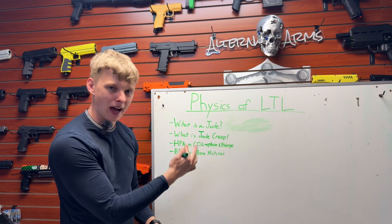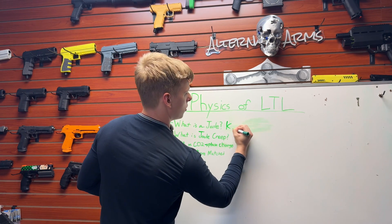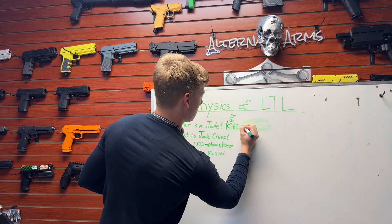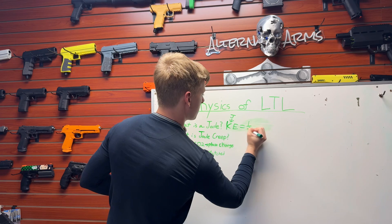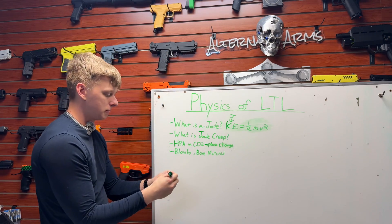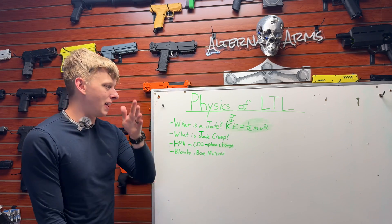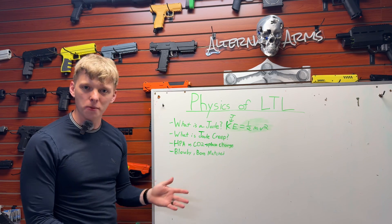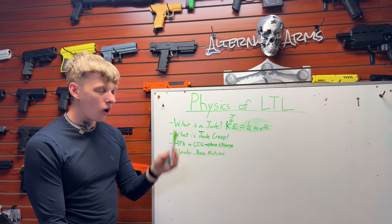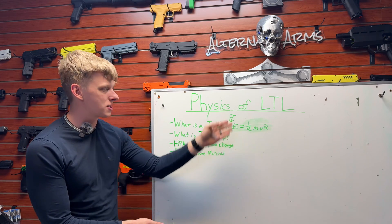I'm actually going to write down that aforementioned equation just to show you guys. So we have kinetic energy, which is represented by joules, equals one half mass times velocity squared. Now, obviously those of you who took physics or calculus understand that this is derived pretty easily using fundamental calculus theories — but we're not here to go over that. All this is saying is that a joule represents the relationship between mass and velocity.